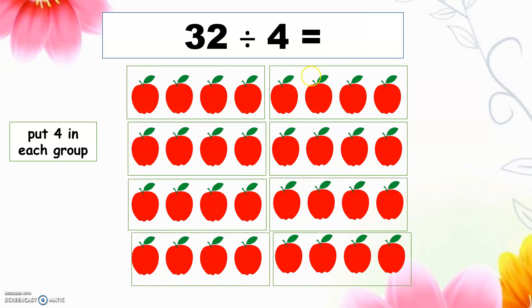Now let's recount how many groups are here. 1, 2, 3, 4, 5, 6, 7, 8. The answer will be 8. So there are 8 groups.